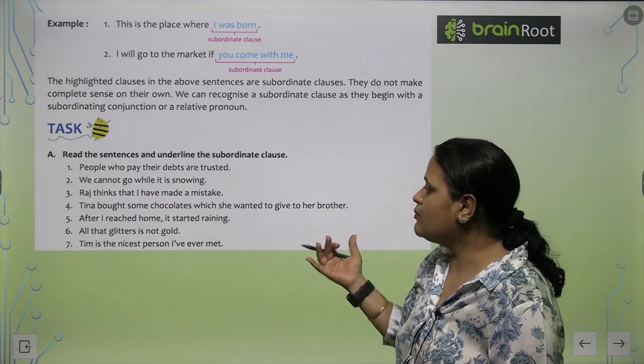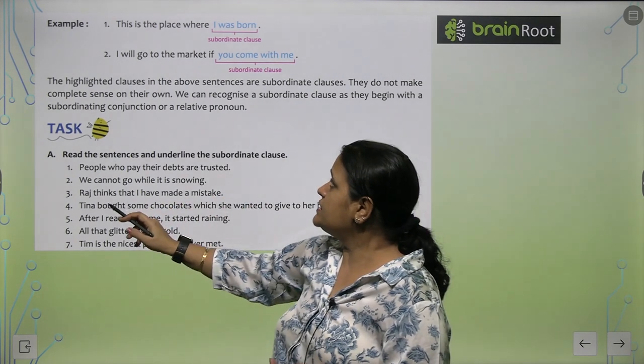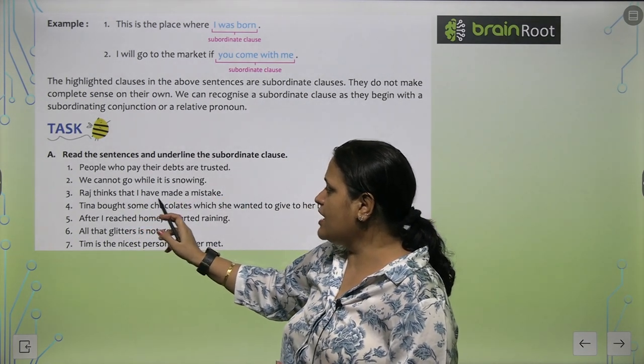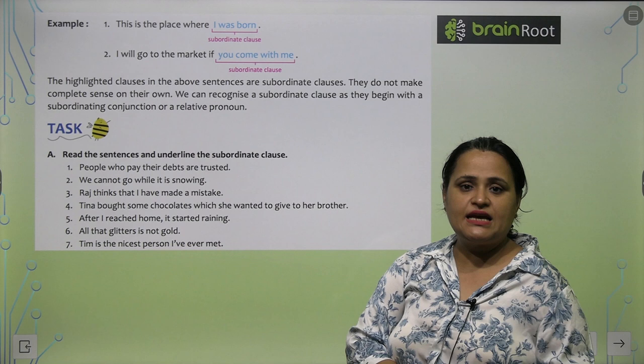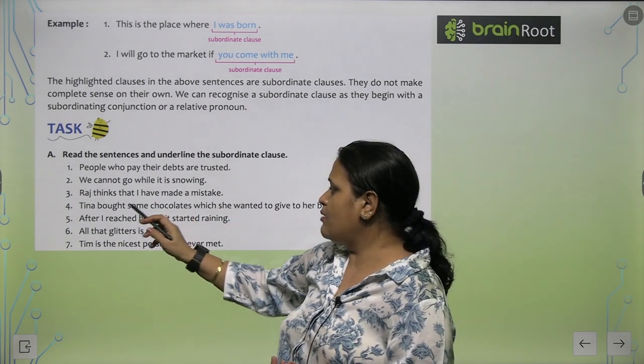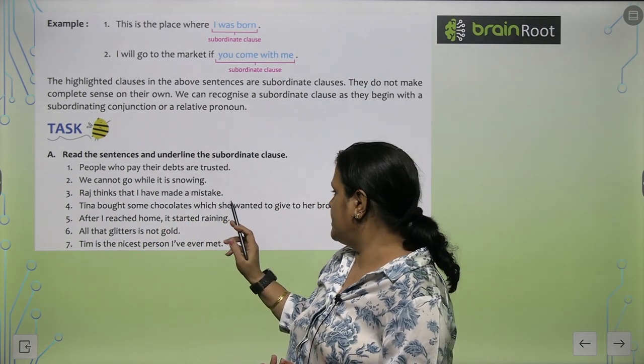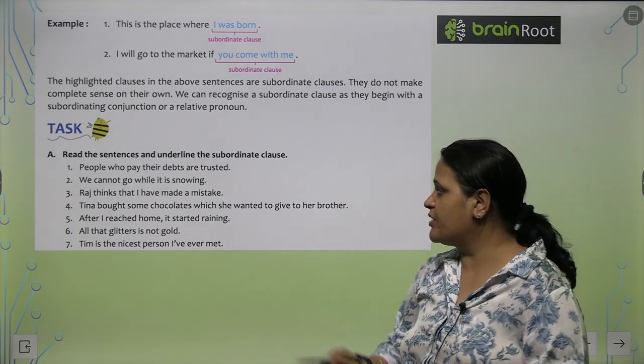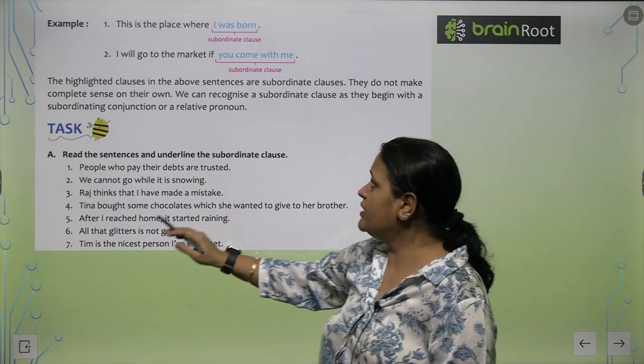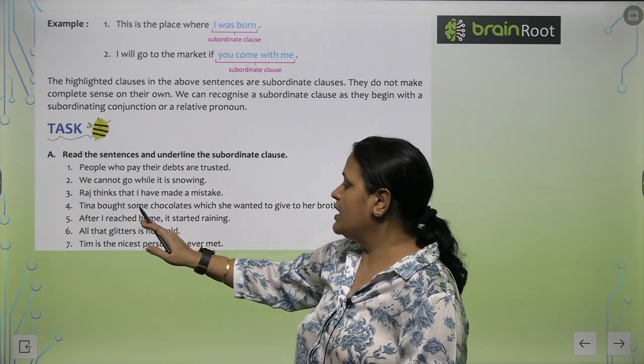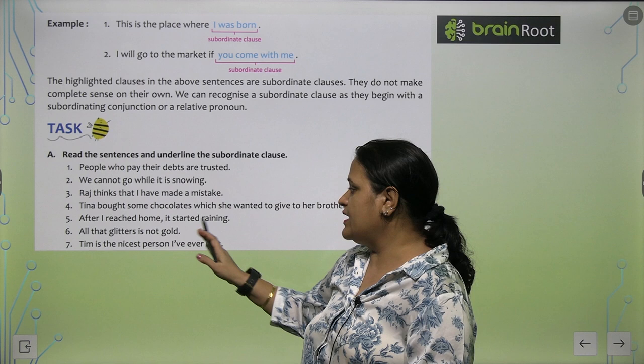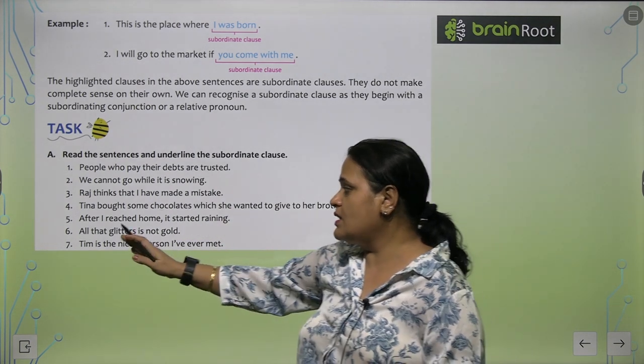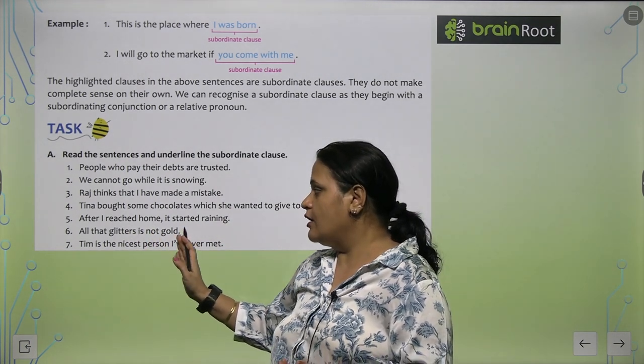Raj thinks that I have made a mistake. Right? Tina bought some chocolate which she wanted to give her brother. She wanted to give her brother is the subordinated clause. After I reach home, it started raining. It started raining. All that glitter is not gold.